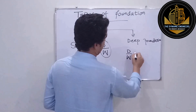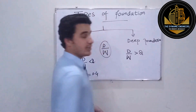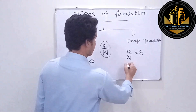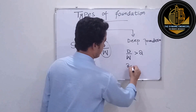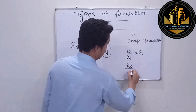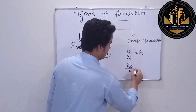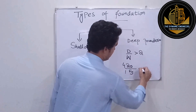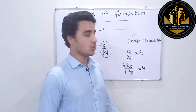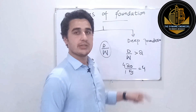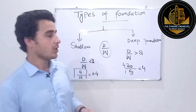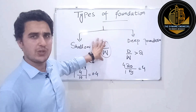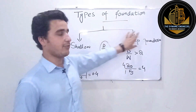Now if the depth-to-width ratio is greater than 2, then it will be a deep foundation. For example, if the depth is 20 meters and the width is 5 meters, D/W equals 4, and since 4 is greater than 2, it is a deep foundation.